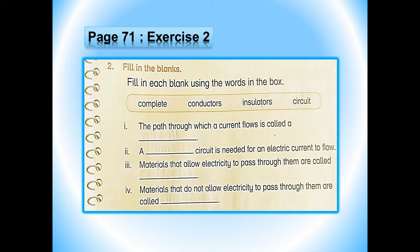Number 4: materials that do not allow electricity to pass through them are called — insulators. So to repeat: blank number 1 is circuit, blank number 2 is complete, blank number 3 is conductors, and blank number 4 is insulators.